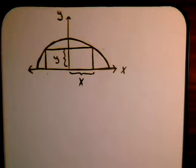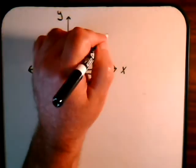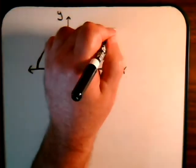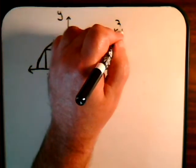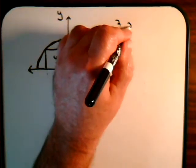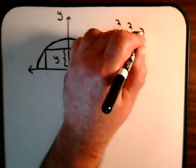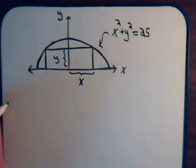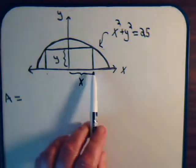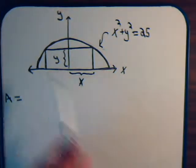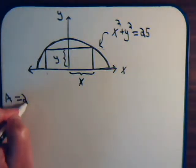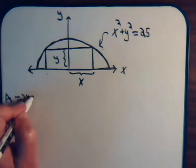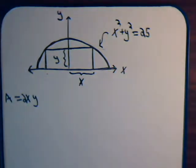The equation for the circle is x squared plus y squared equals 25. The equation for the area of our rectangle is the base, which is 2x, times the height, which is y.